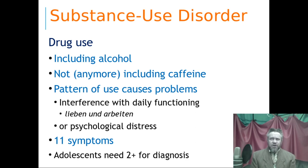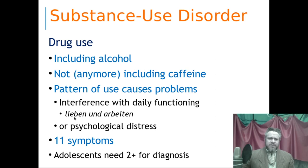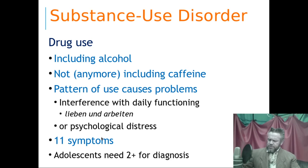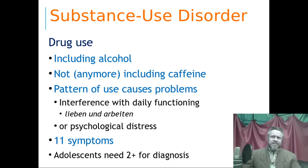When those experiences start to cause significant problems in a person's life — in their relationships and their work, or psychological distress — we diagnose them. You can find these criteria in your textbooks. Scientists have come up with 11 symptoms; you need two or more of them. This is a broad range of ways you can be diagnosed with substance use disorders — 11 possibilities and you only need two of them.